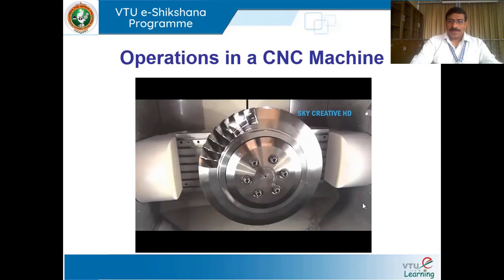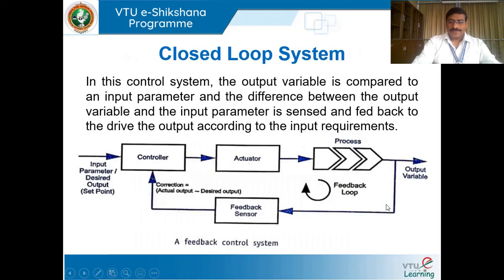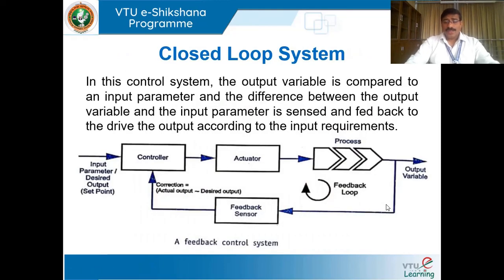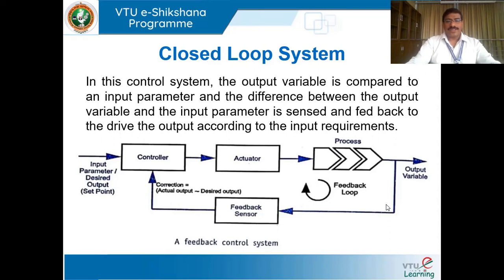There are different degrees of freedom in a CNC machine by virtue of which any critical, intricate component having very complicated features can be easily machined in a very short span of time, with no human intervention, with the highest amount of accuracy and precision. That is the reason the entire manufacturing industry — multinational companies, transnational companies, and big conglomerates in the manufacturing sector — go for CNC machines and entire automated systems comprising robots and different types of CNC machines.